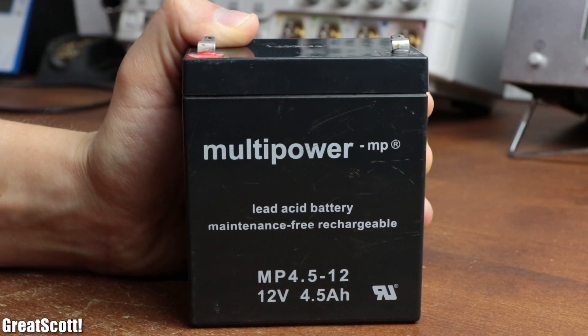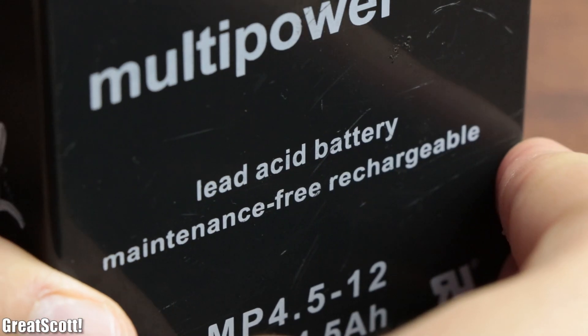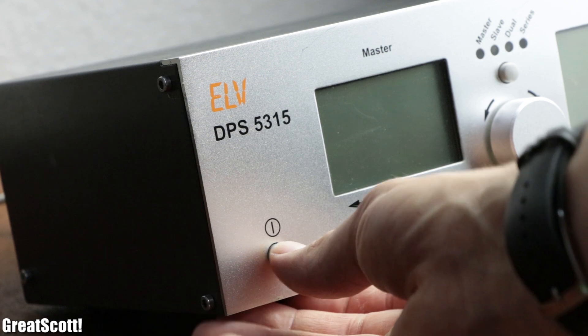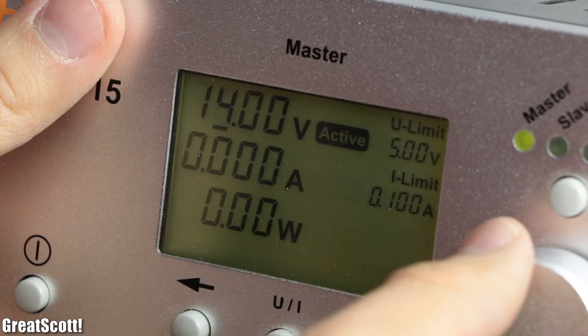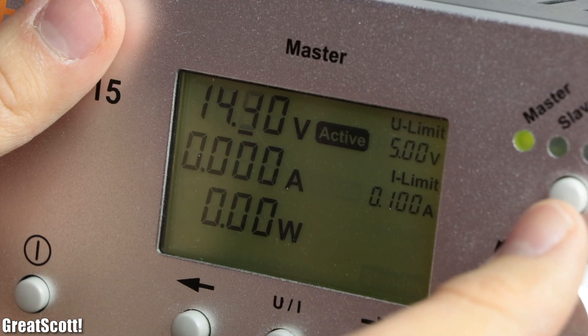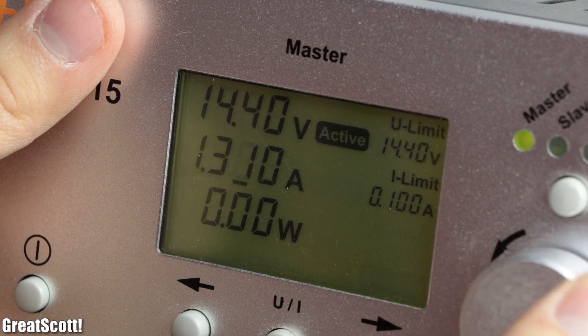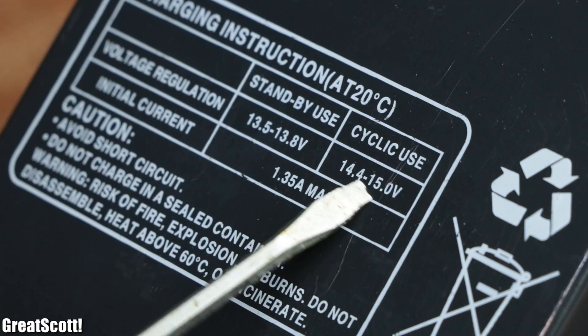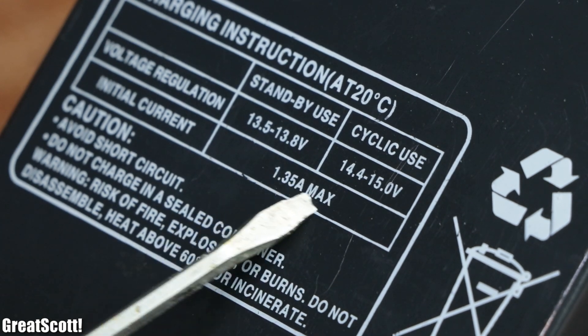A week ago I wanted to charge up my lead acid battery with my lab bench power supply. So I set its voltage to 14.4V and its current limit to 1.35A just like the label of the battery recommends it.